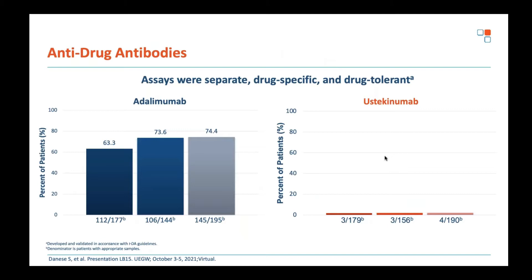Immunogenicity is also very interesting. At the start of SEAVIEW, patients had to stop concomitant immunomodulation. We know adalimumab generates antibodies, and indeed most patients developed antibodies — bearing in mind this used a drug-tolerant assay and most antibodies were very low titer, less than 1:8. So many patients got antibodies that there was no clear relationship between antibodies and outcome.